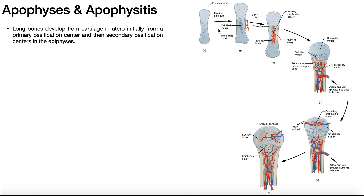I have this figure right here, and by no means are we going to go through all of it, but I just want to mention a few things. This figure depicts the development over time of long bones, starting with this hyaline cartilage matrix. Long bones develop from this in utero — they start off as hyaline cartilage, very spongy, and over time they get more and more ossification until they resemble something that we might have in a pediatric patient.